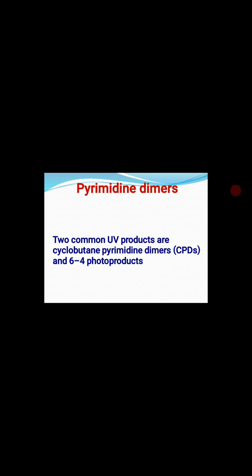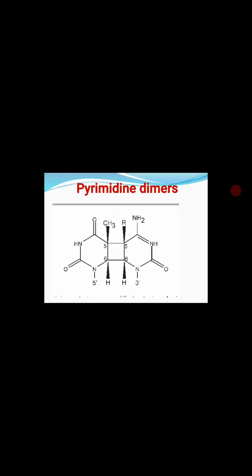The two types of products produced after UV absorption are: first, cyclobutane pyrimidine dimers, abbreviated CPD; and second, 6-4 photoproducts. CPD stands for cyclobutane pyrimidine dimer. After absorption of UV radiation, covalent bond formation results in either a CPD or a 6-4 photoproduct, or both, in a particular DNA.